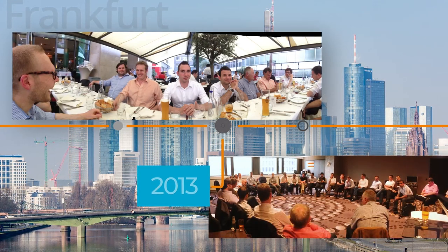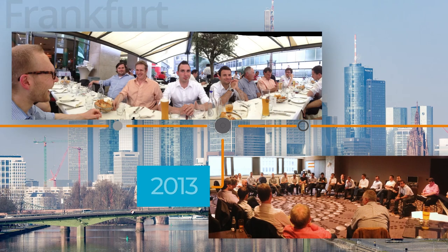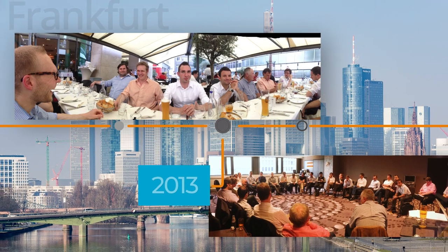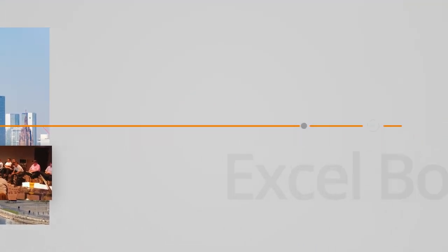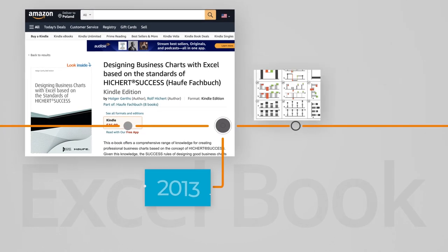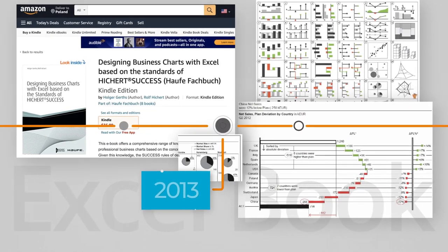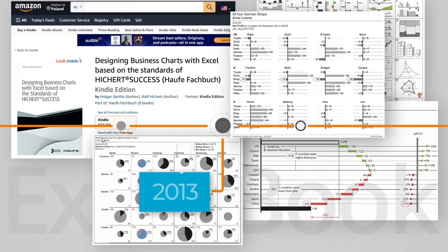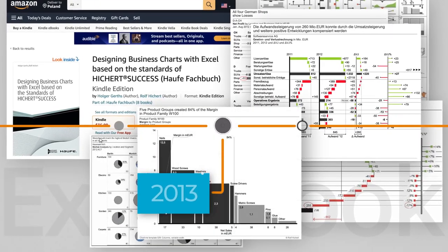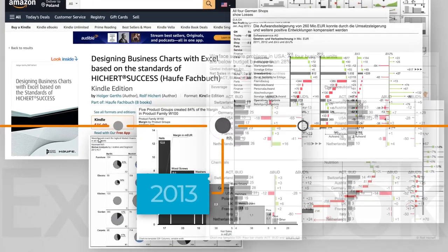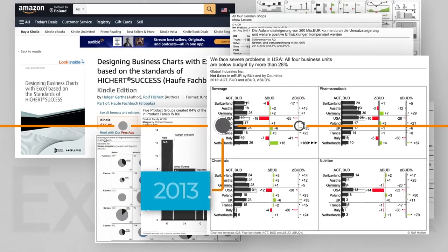We discussed the possibility of founding an association as early as 2013. After so many years developing chart concepts based on Excel together with Holger Geertz, we published a book showing all 120 different tricks, first in German and then in English.